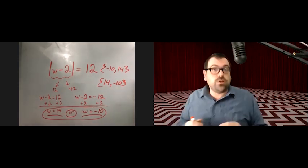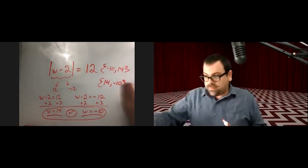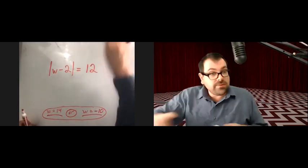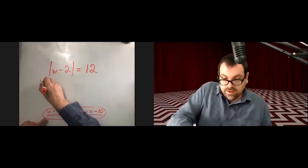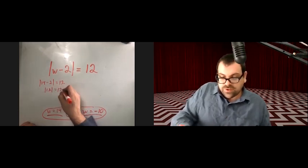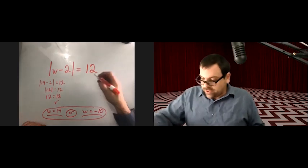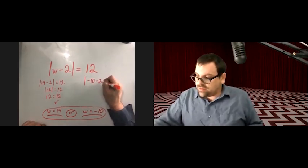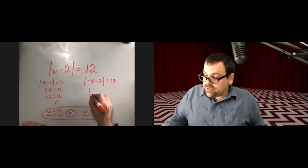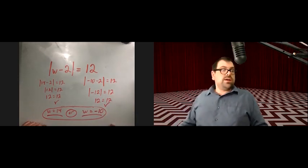You can check both answers. For w equals 14: the absolute value of 14 minus 2 is the absolute value of 12, which is 12 — it checks. For w equals negative 10: negative 10 minus 2 is negative 12, and the absolute value of negative 12 is positive 12 — that checks as well.